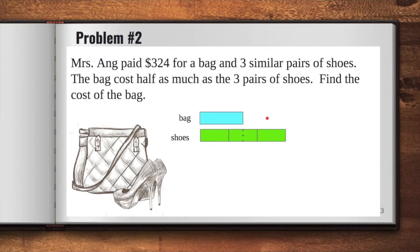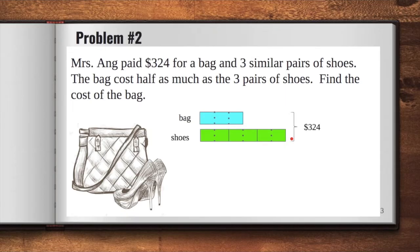Now, do you notice that one unit is divided into two equal units? It will be easier if we do the same thing for all the unit bars that we drew. And we can also do the same thing for the bag. Now, to complete the model, we know that all the items cost $324. Now, we are ready to solve.